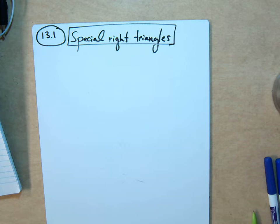Section 13.1, Special Right Triangles. When we get to the unit circle, the angles that are defined in the unit circle are based on the angles from the special right triangles: 30, 60, and 45.